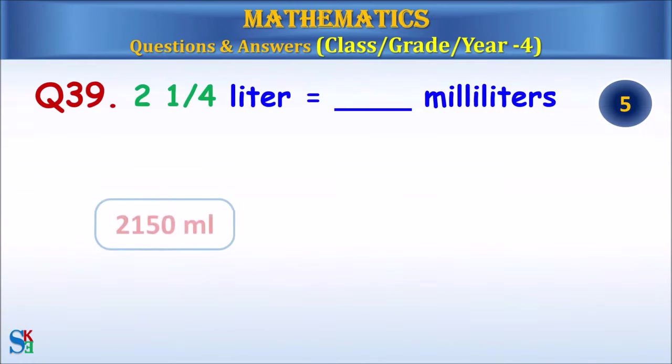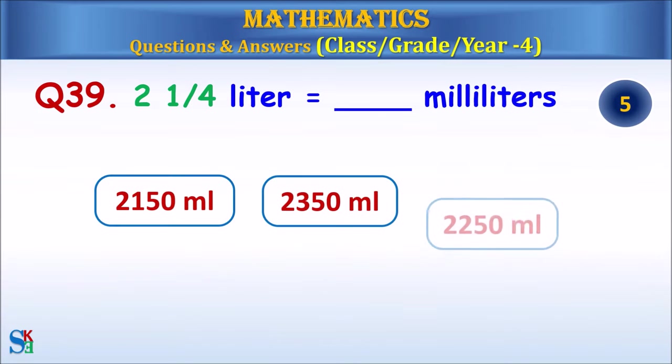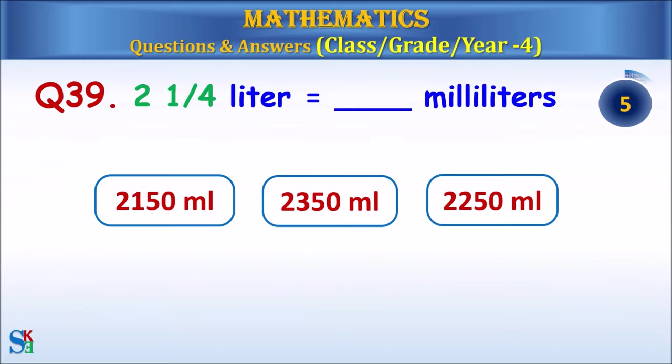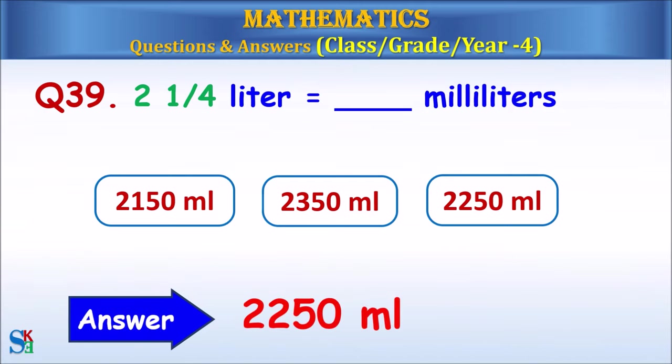Question 39: Two and a quarter liters is equal to how many milliliters? The answer is 2,250 milliliters.